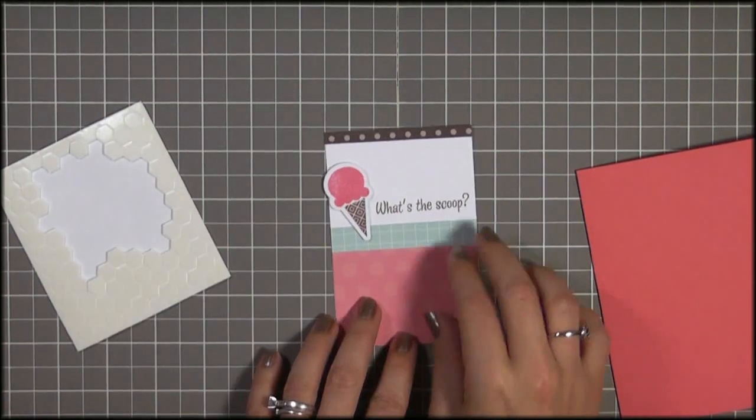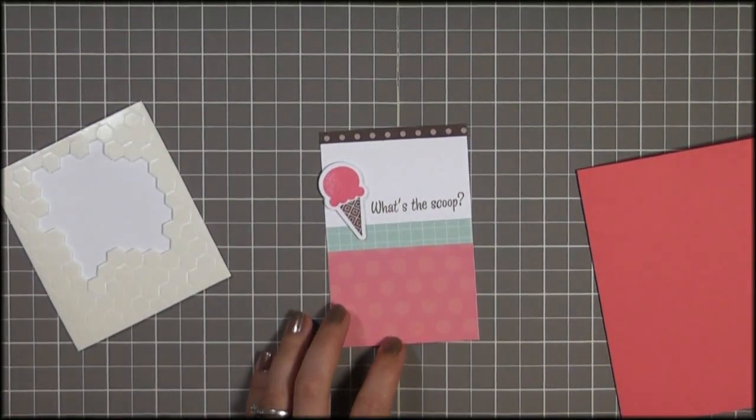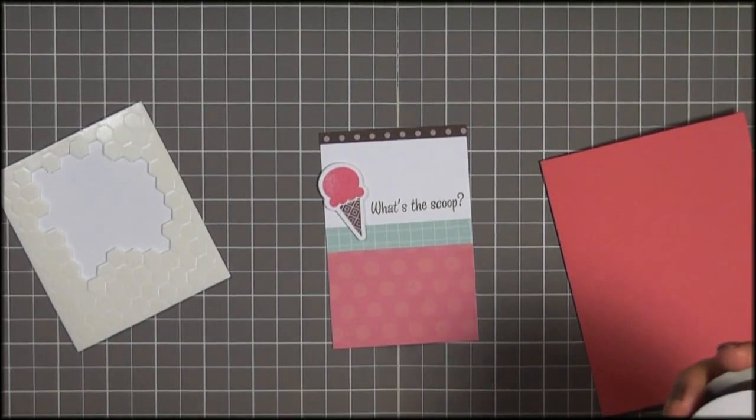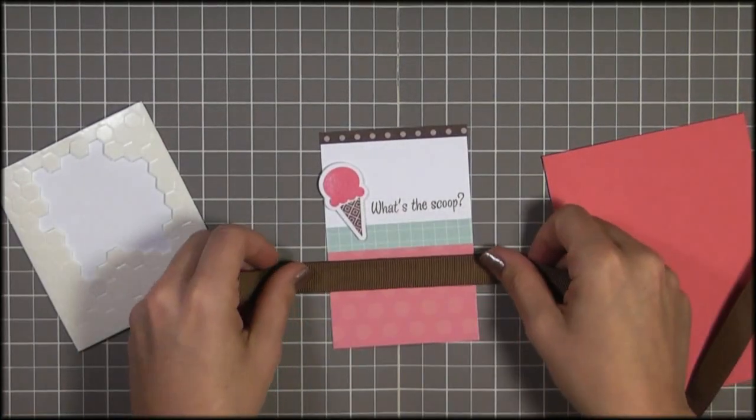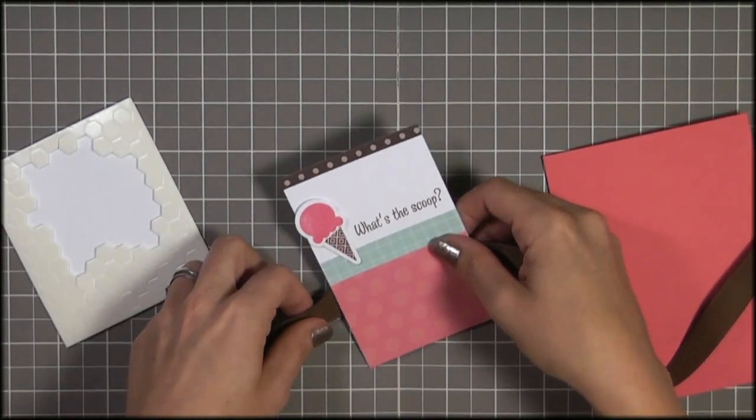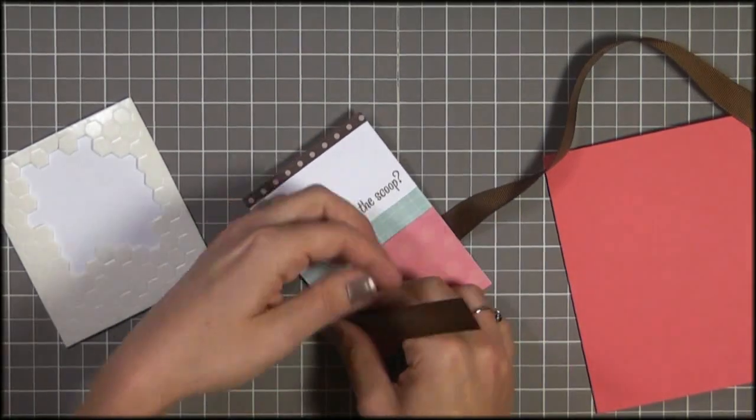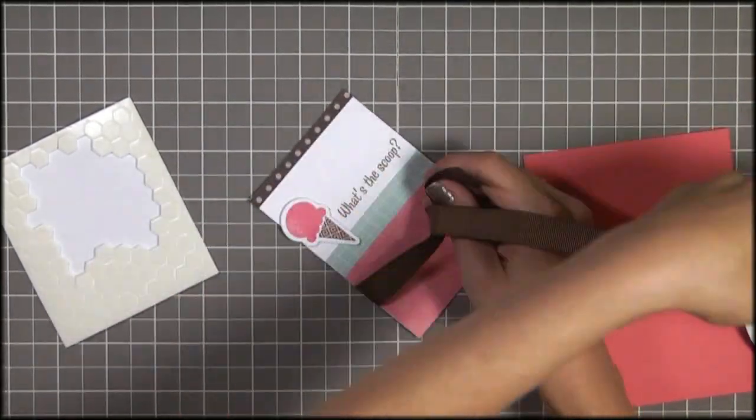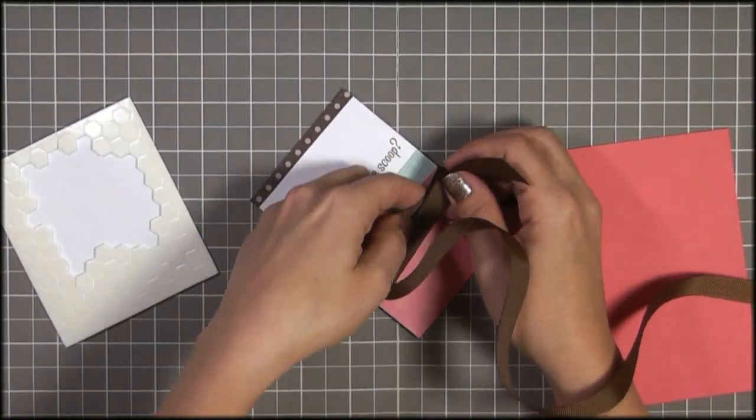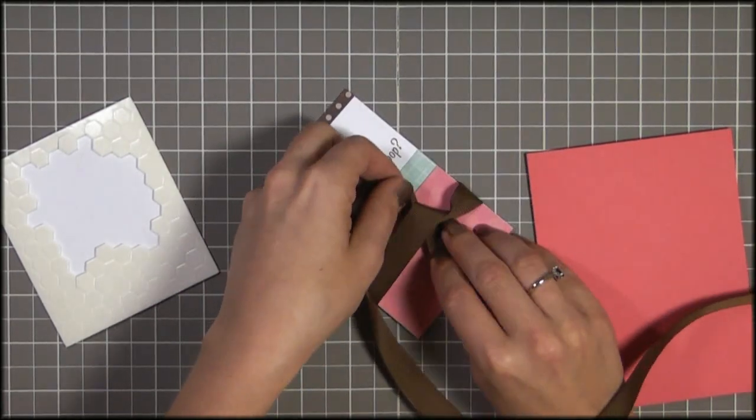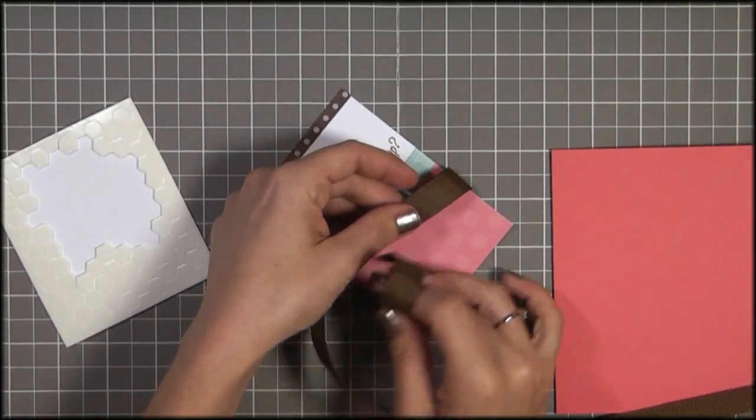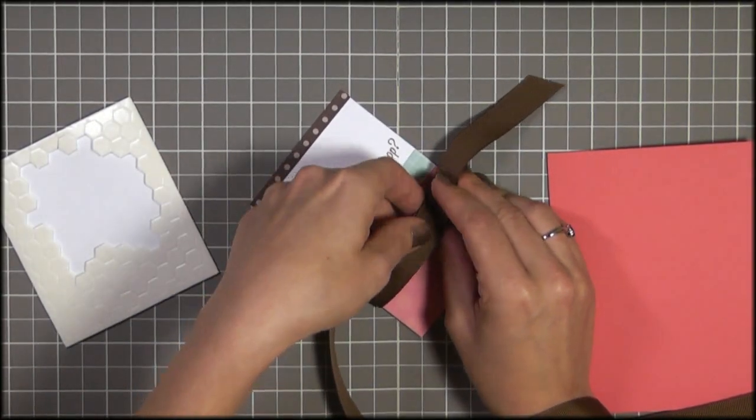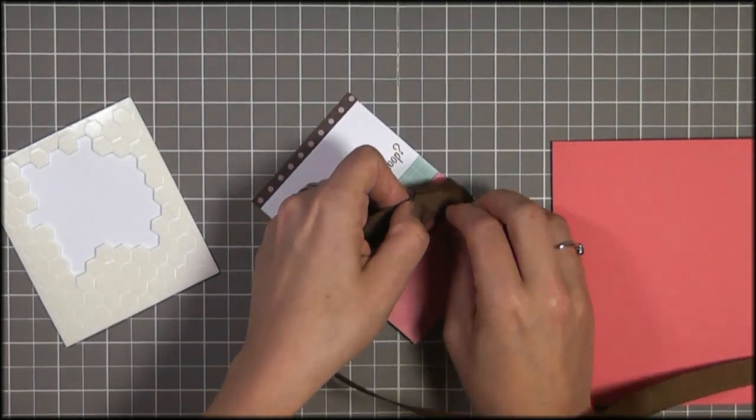I'm going to tie a piece of ribbon right across here and I'm using Paper Trey Inc's dark chocolate. And I'm just going to tie this in a knot. And you'll notice that since I have my embellishment over here on the left side, I'm going to do my knot over on the right side, just for a little bit of balance.